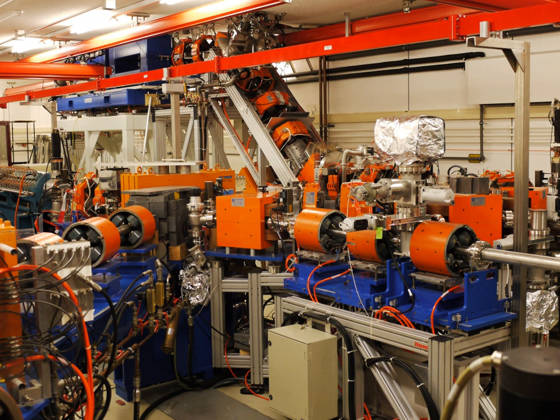The free electron laser utilizes technology developed by Hans Motz and his co-workers, who built an undulator at Stanford in 1953 using the wiggler magnetic configuration which is one component of a free electron laser. Madey used a 43 MeV electron beam and 5 meter long wiggler to amplify a signal.